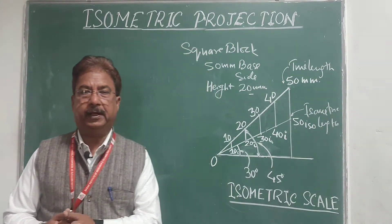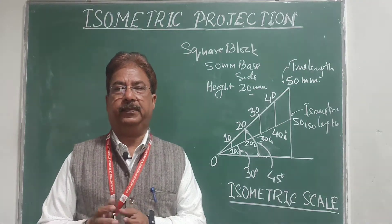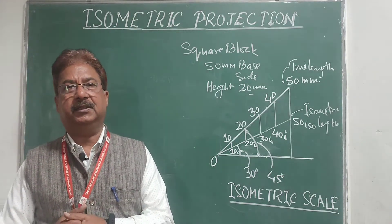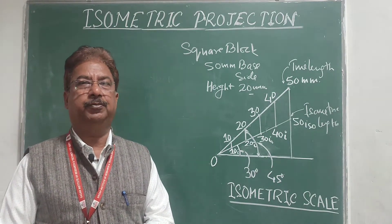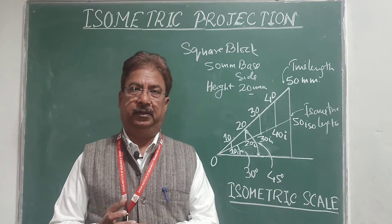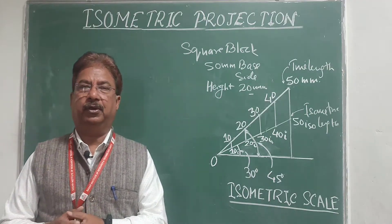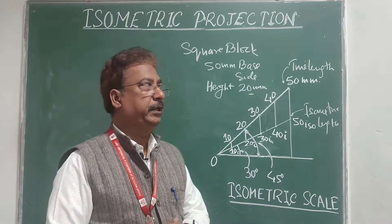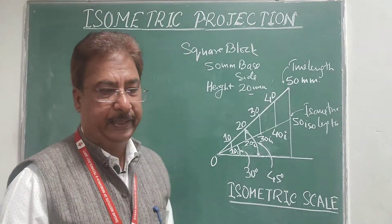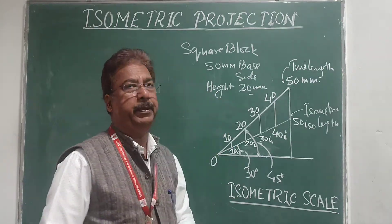Welcome again for another lecture on engineering graphics isometric projection. As discussed earlier, in isometric projection the object will be reduced by a ratio of 9 to 11. This time I am going to draw an isometric projection of a composite solid — a square block of 50 mm side and 20 mm height, with a sphere placed above it.